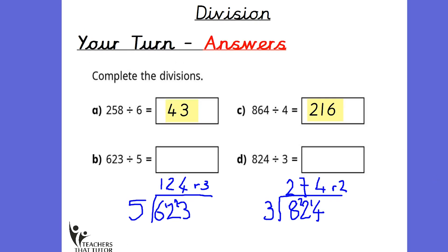Okay, how did you get on? I'm just going to reveal the answers to you now. A and C did not have remainders — the answers were 43 and 216. However, B and D did have remainders. For B: how many fives in 6? There was 1 with a remainder of 1. How many fives in 12? There were 2 with a remainder of 2. How many fives in 23? There were 4 fives with a remainder of 3. For D: how many threes in 8? There were 2, with a remainder of 2. How many threes in 22? There were 7 with a remainder of 1. How many threes in 14? There were 4, with a remainder of 2 left over. So notice how remainders aren't just on the final number — they can come at any point within the sum.